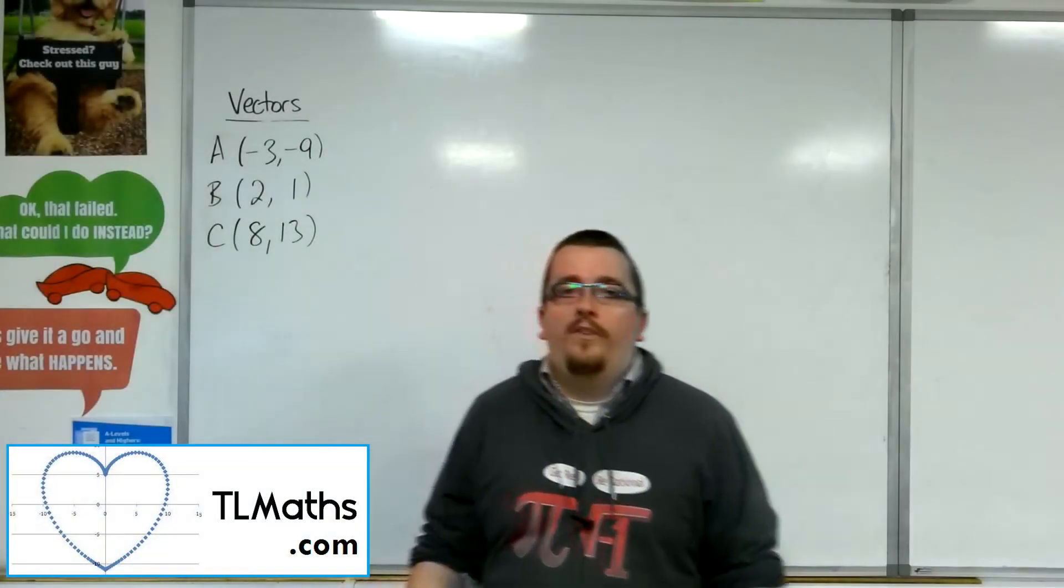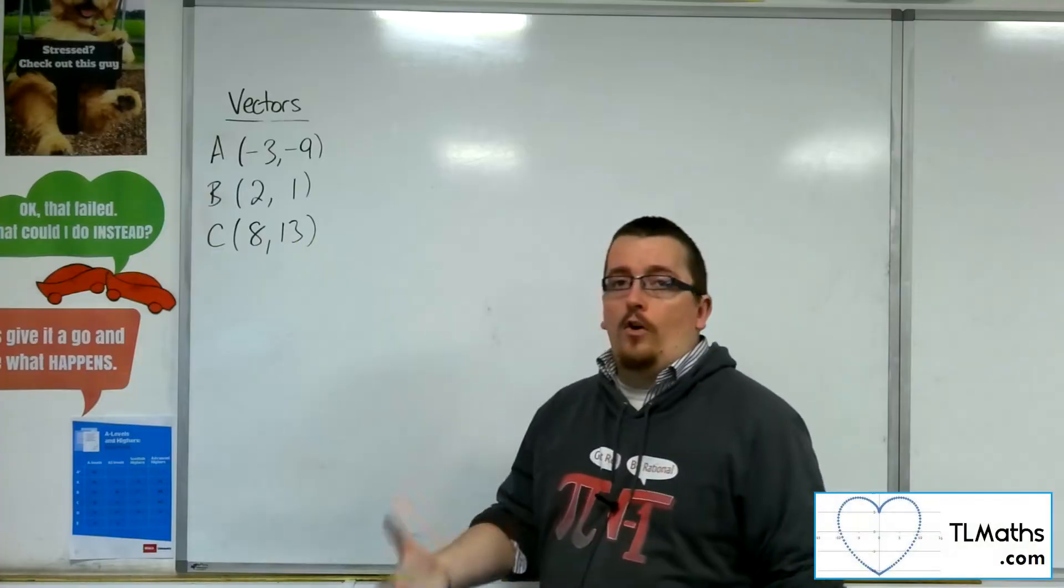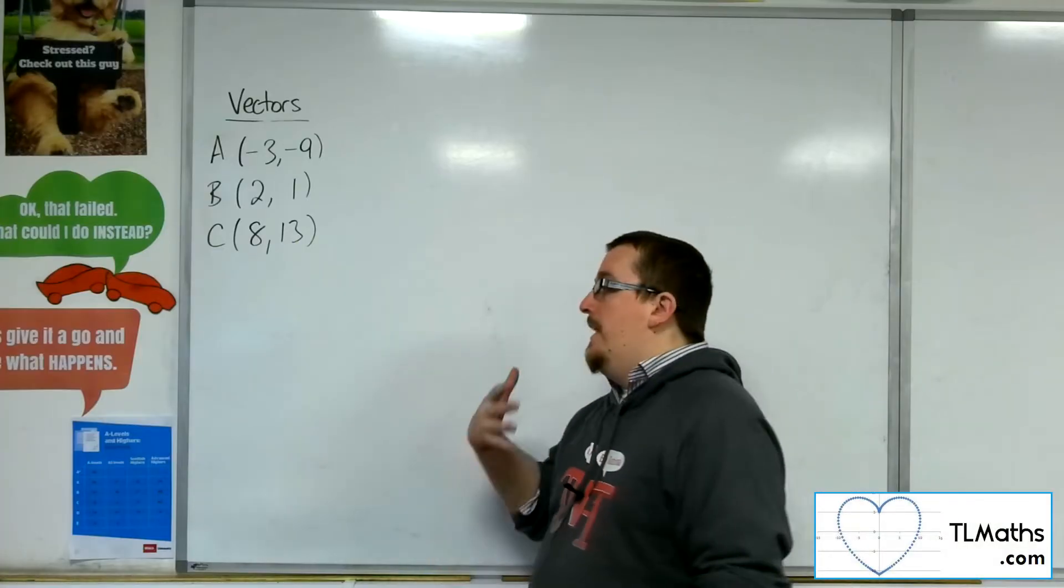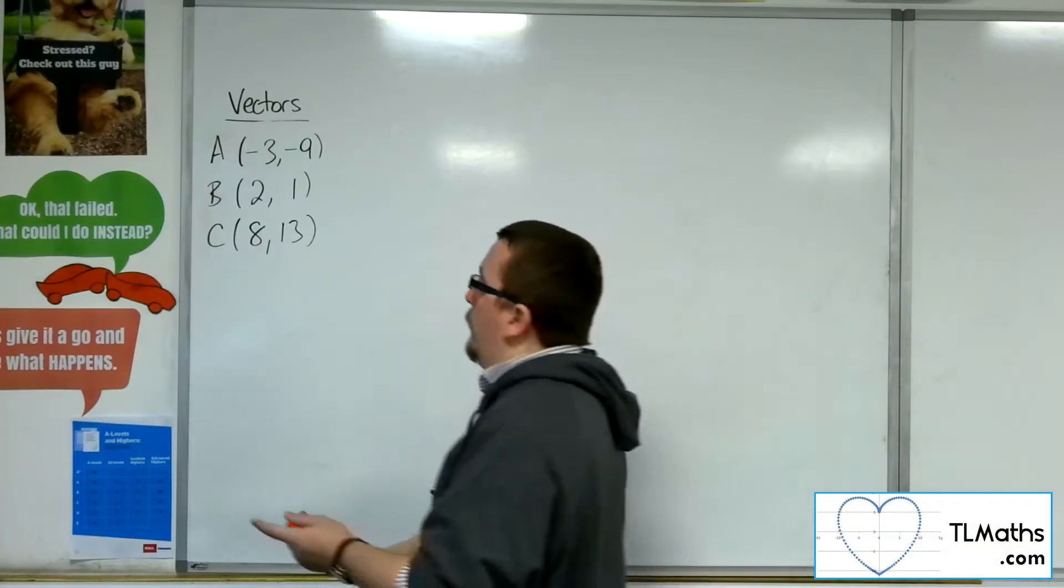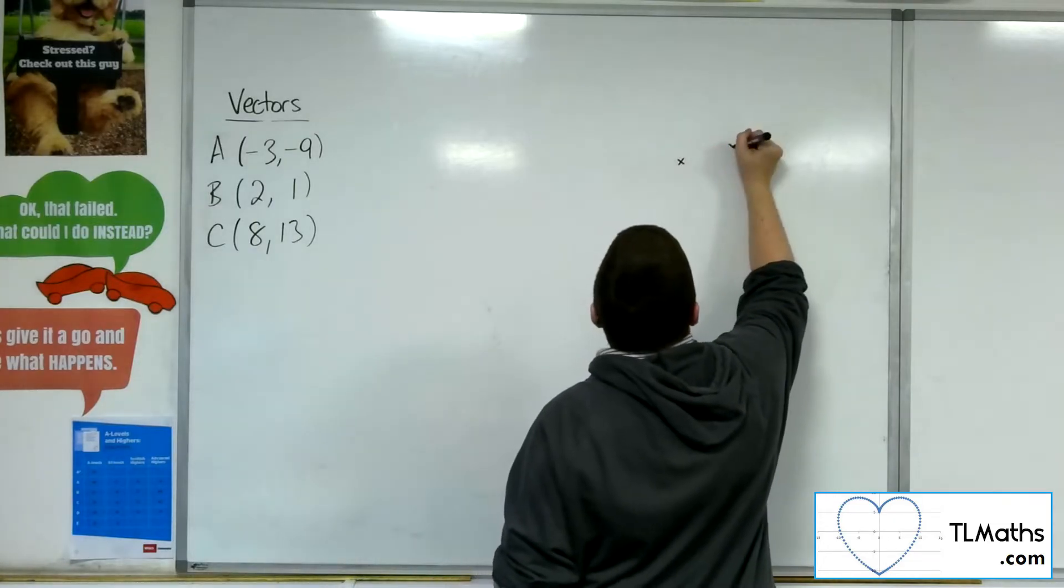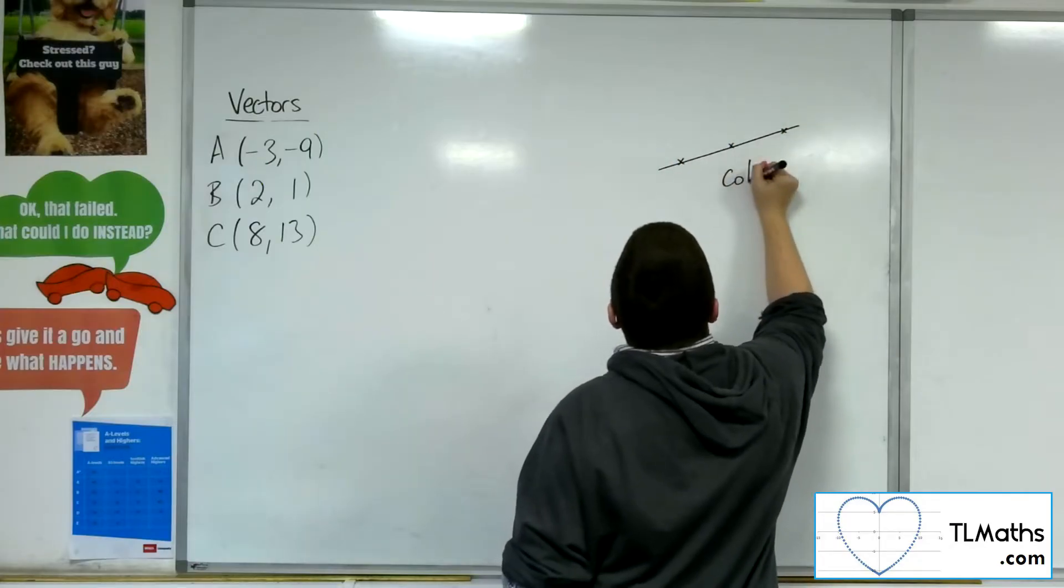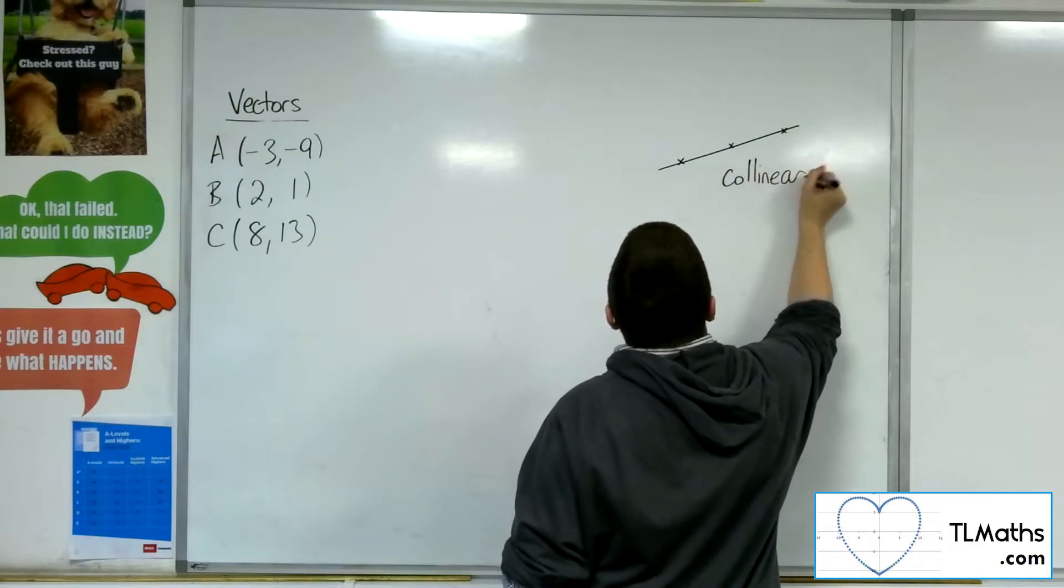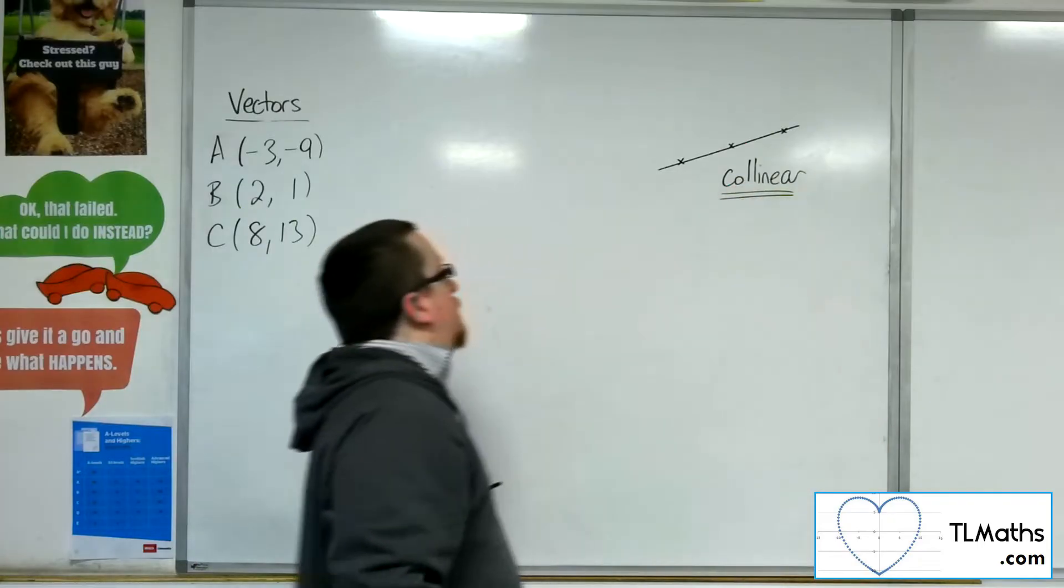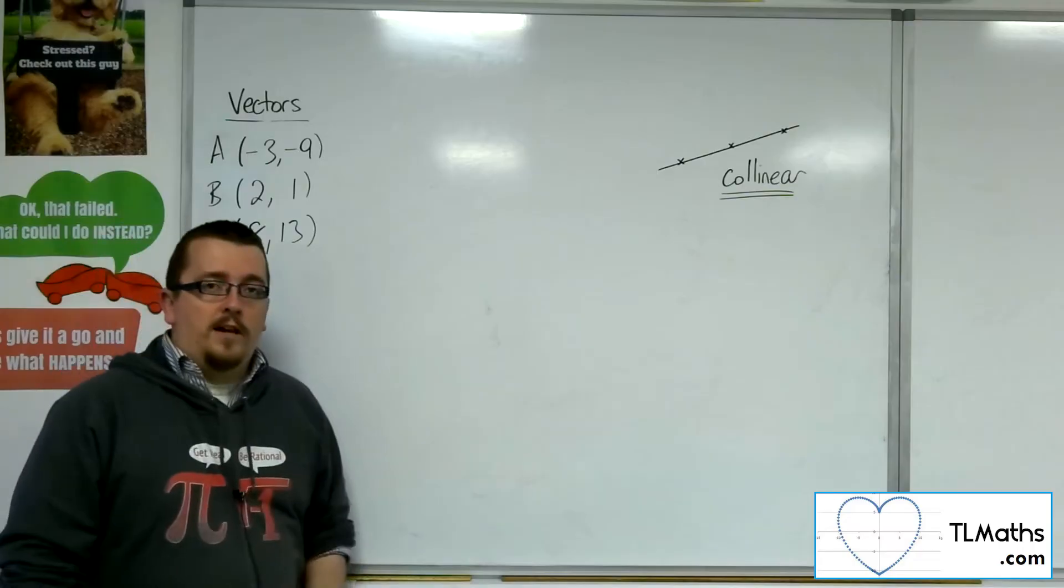Let's say we want to determine whether these three points lie on the same line. If three or more points lie on the same line, we refer to them as being collinear. So we're trying to determine if these three points are collinear.